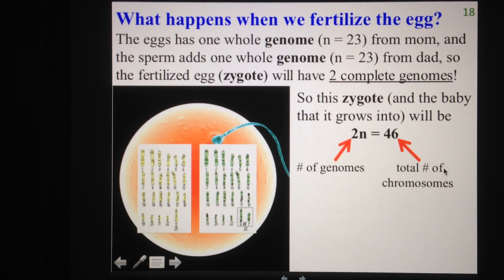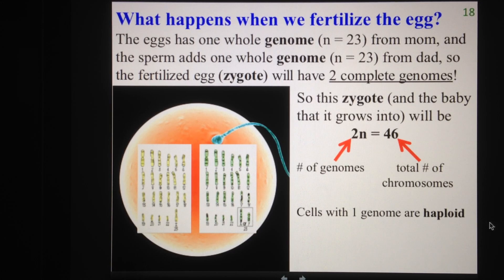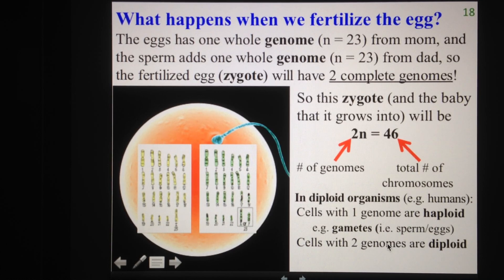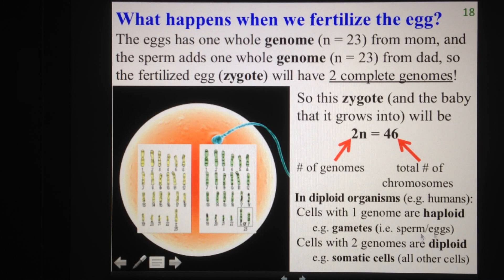A little bit more terminology: we call cells that have one whole genome haploid, and cells that have two genomes diploid. In diploid organisms such as ourselves, the only haploid cells we find are the gametes — our sperm and eggs. Our somatic cells, which are pretty much most of the other cells in our body, are all diploid. So any skin cell or muscle cell will have two whole genomes and be diploid, while sperm or eggs are haploid, with only 23 chromosomes.